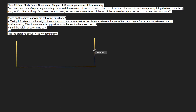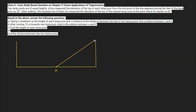As per the question, the boy is standing at the midpoint. Let me mark the midpoint M of the line segment joining the feet of the lampposts. The angle of elevation from M is 30 degrees. The lampposts are standing vertically, so the angle at the base is 90 degrees. The angle of elevation is 30 degrees from M towards both lampposts.